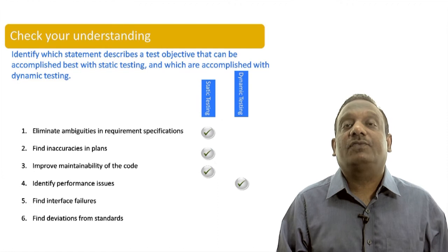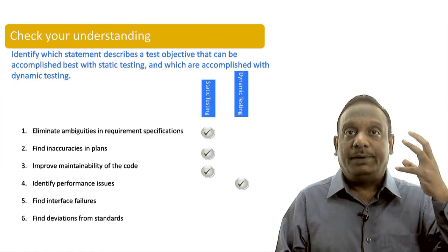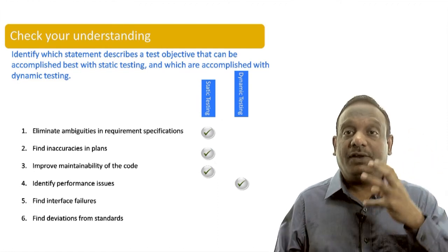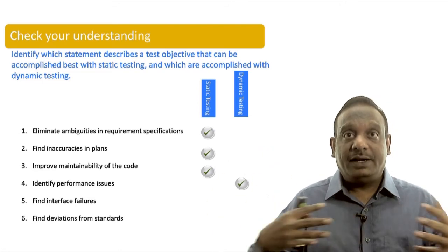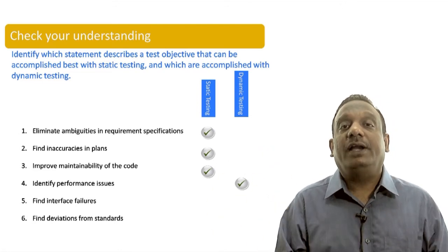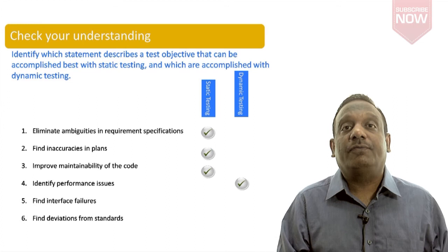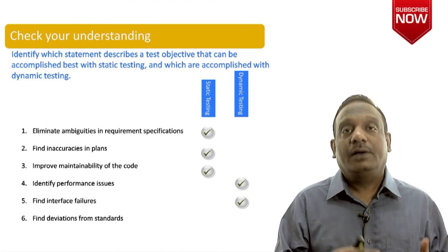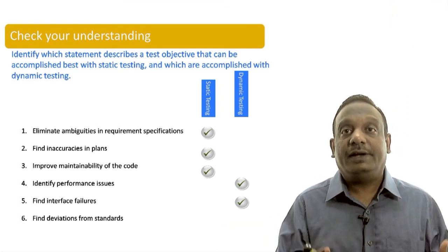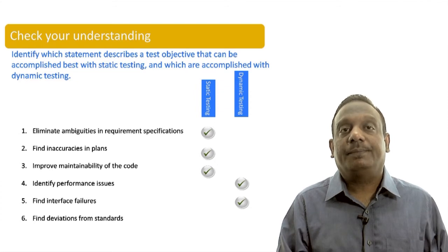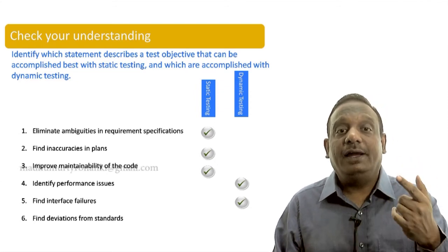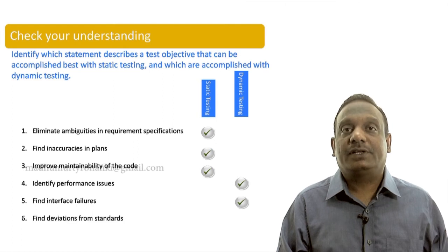Find interface failures. Between hardware, software, between a software and another software. When they are integrating and working together, finding those interface errors. How can they be found? By executing code. By exercising the software only, dynamic way only, we can find them.